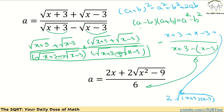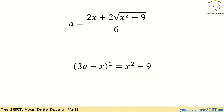For the cross term, 2 times √(x+3) · √(x-3), I use the same difference-of-squares identity, giving √(x²-9). Combining: (x+3) + (x-3) = 2x, so the numerator becomes 2x + 2√(x²-9). So a = (2x + 2√(x²-9)) / 6.